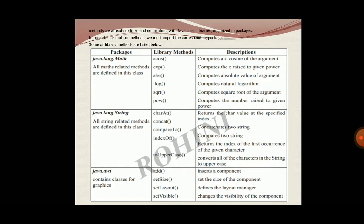Some of the library packages are given here. The package java.lang.Math includes methods such as cosine, exponent, absolute, log, square root, and power. Then java.lang.String includes methods such as charAt, concatenate, compareTo, indexOf, and toUpperCase — we have several methods under java.lang.String to handle strings. Then java.awt includes methods such as add, size, setLayout, and setVisible. These are the examples given for the built-in methods.